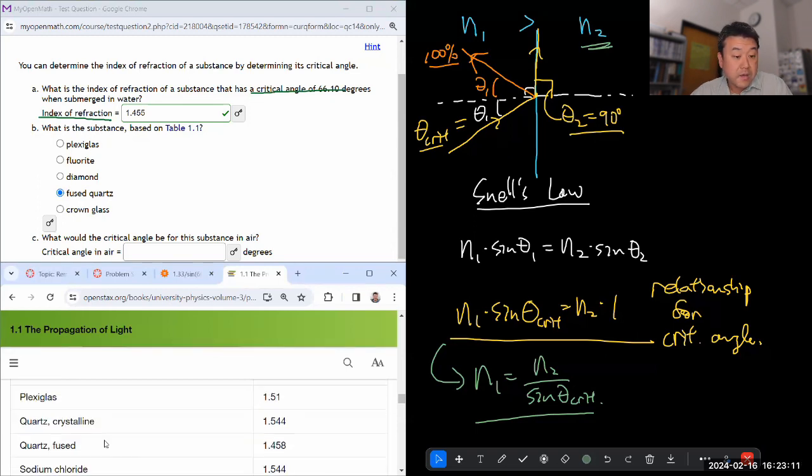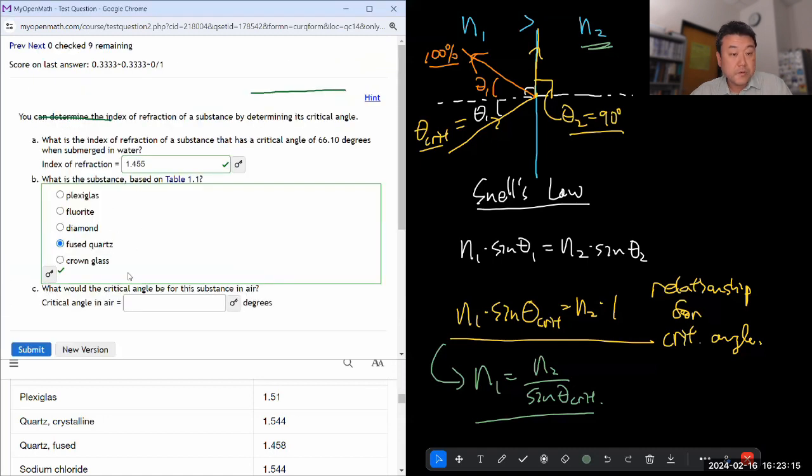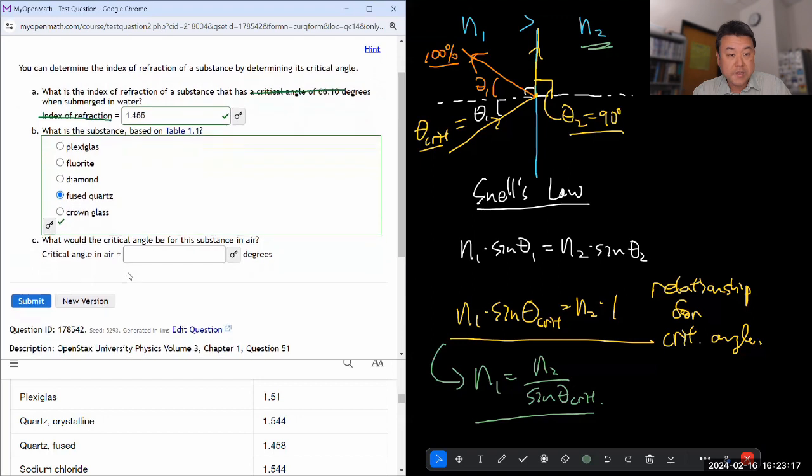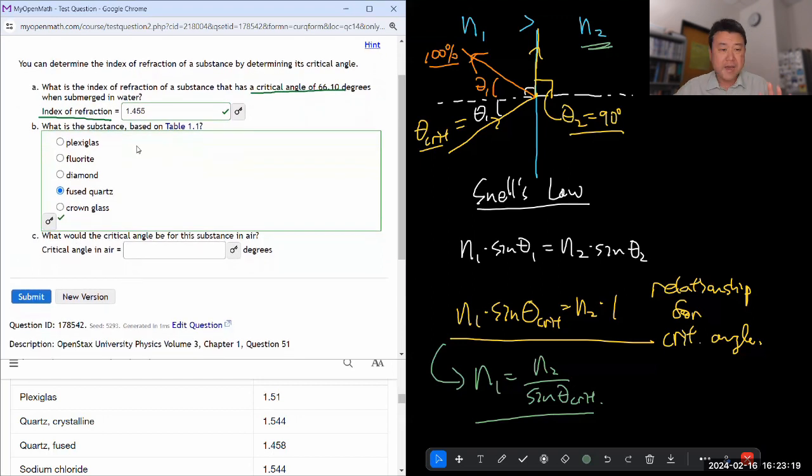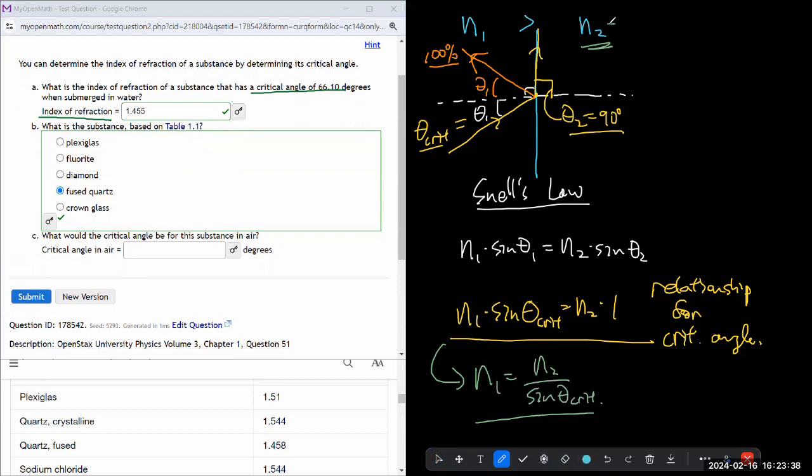So with the fused quartz, then we can use either this or the index of refraction that's here, 1.458. They're both close enough that either would give the same answer. So now it's asking what would be the critical angle for this substance in air. Now we are saying n2, which previously we weren't allowed to set equal to 1. Now we are saying this is equal to 1.